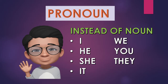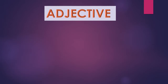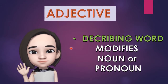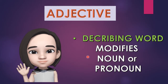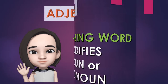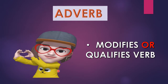Now let us see about adjective and adverb. These two daughters love each other, but there is a difference. Adjective loves her father and brother very much and she keeps on praising them — describing the noun and the pronoun. Adjective is a describing word; it describes a noun or a pronoun. Unlike adjective, adverb loves her mother very much and she always modifies her when there is a need. Adverb is a word that modifies or qualifies a verb.